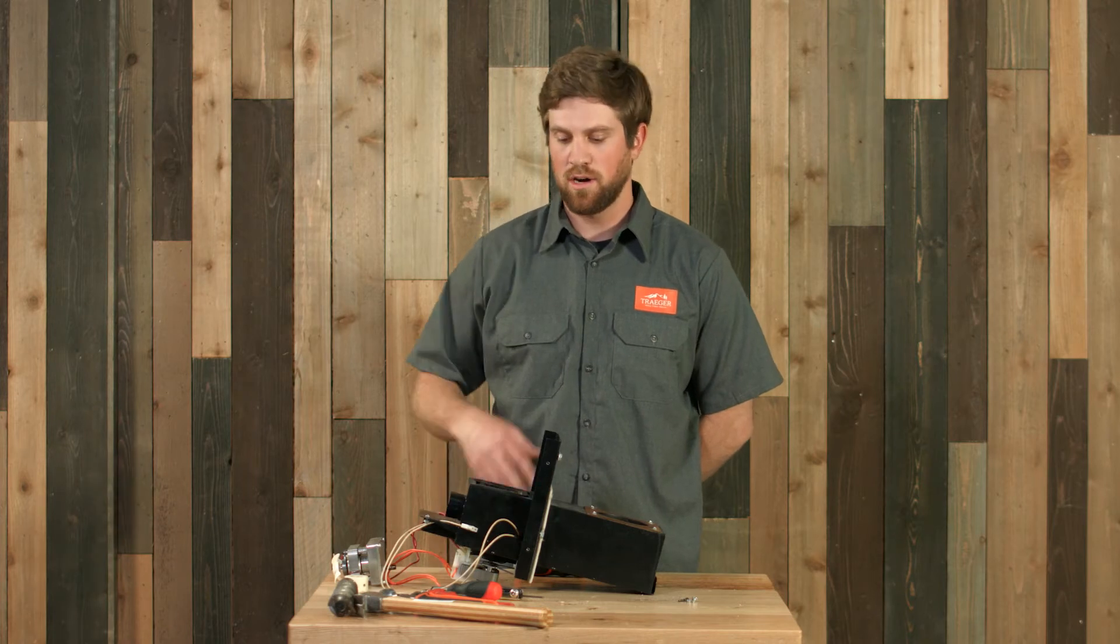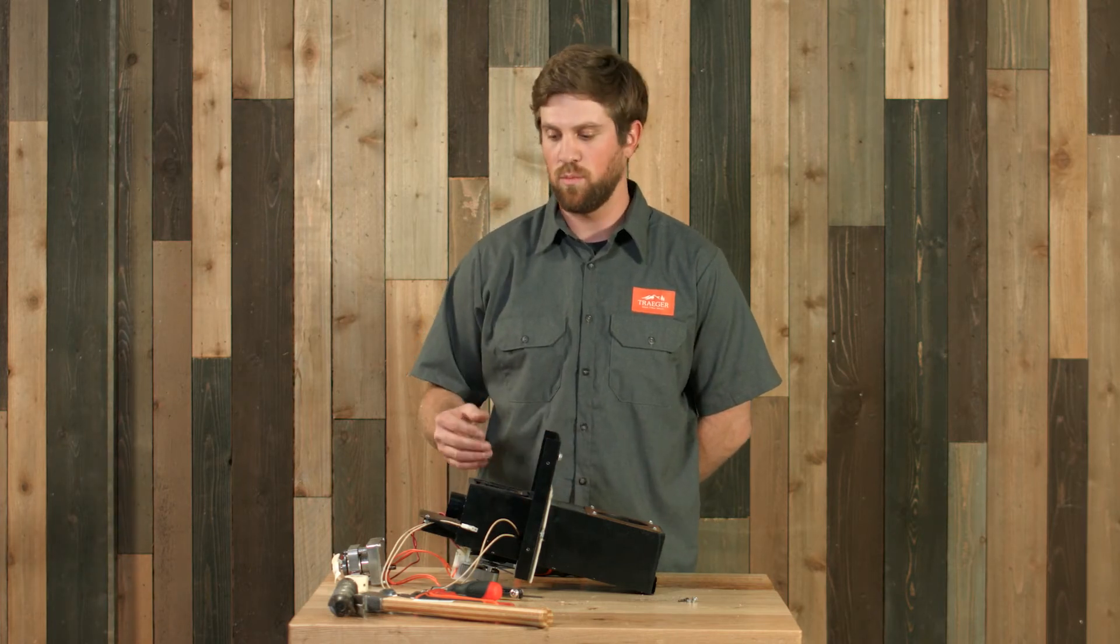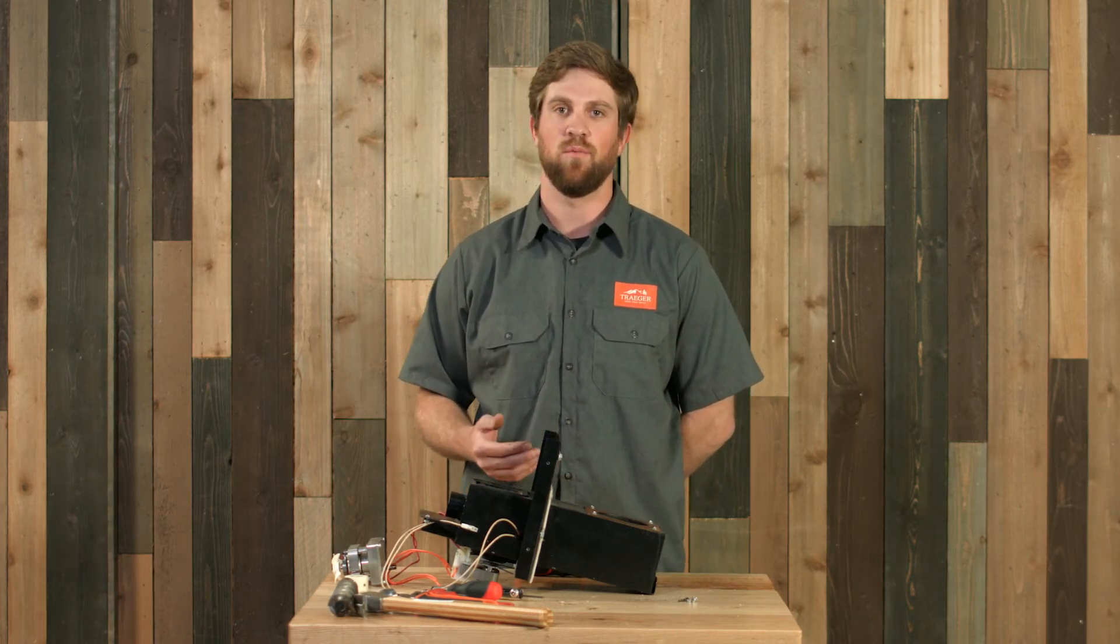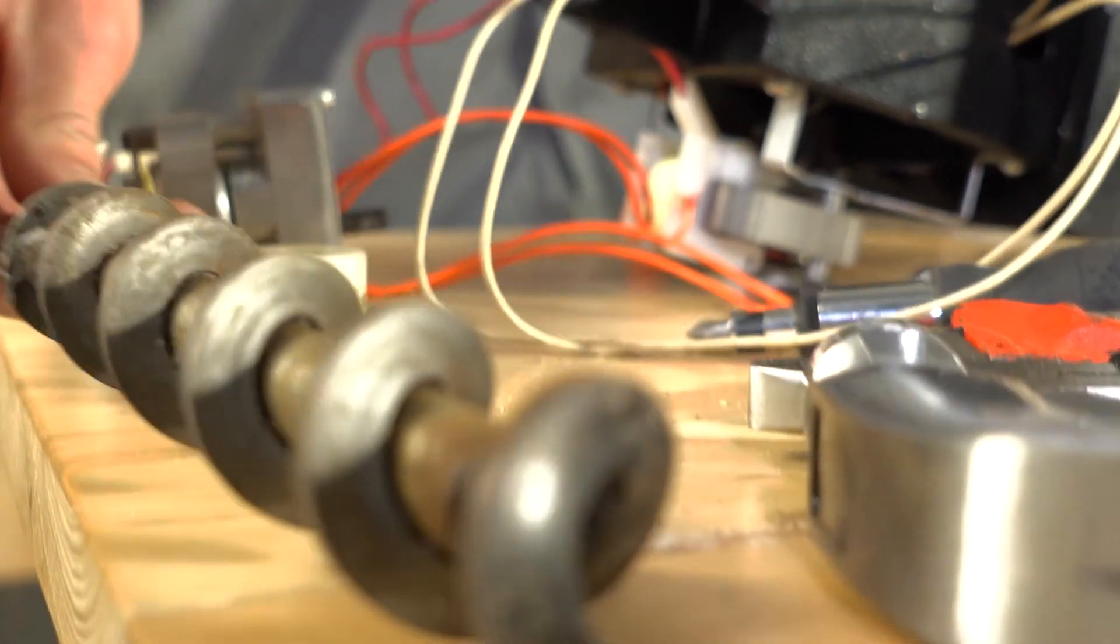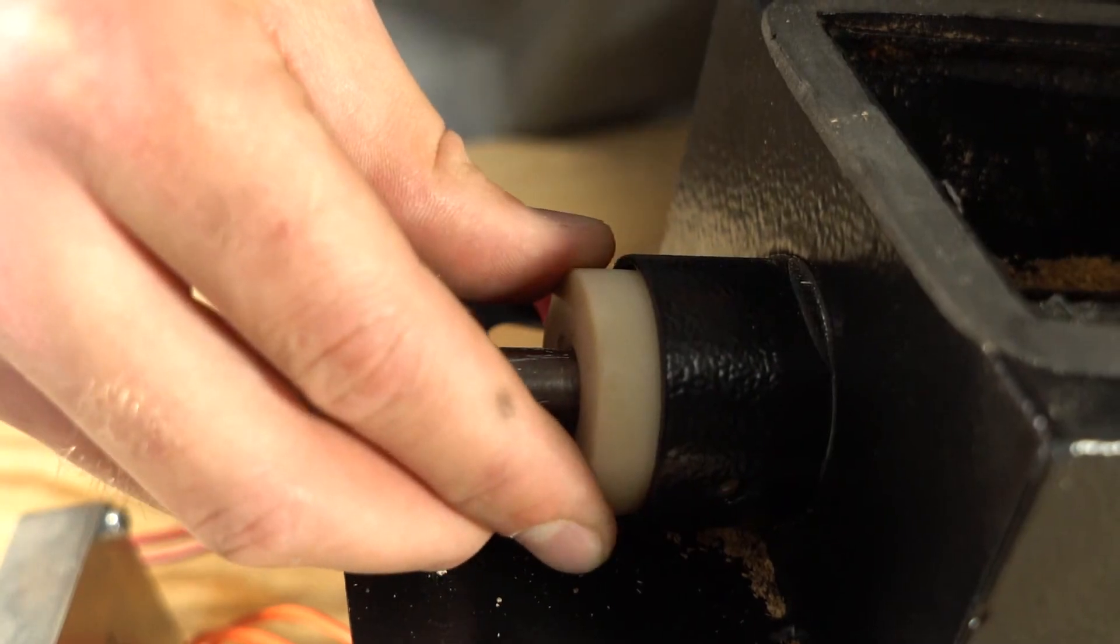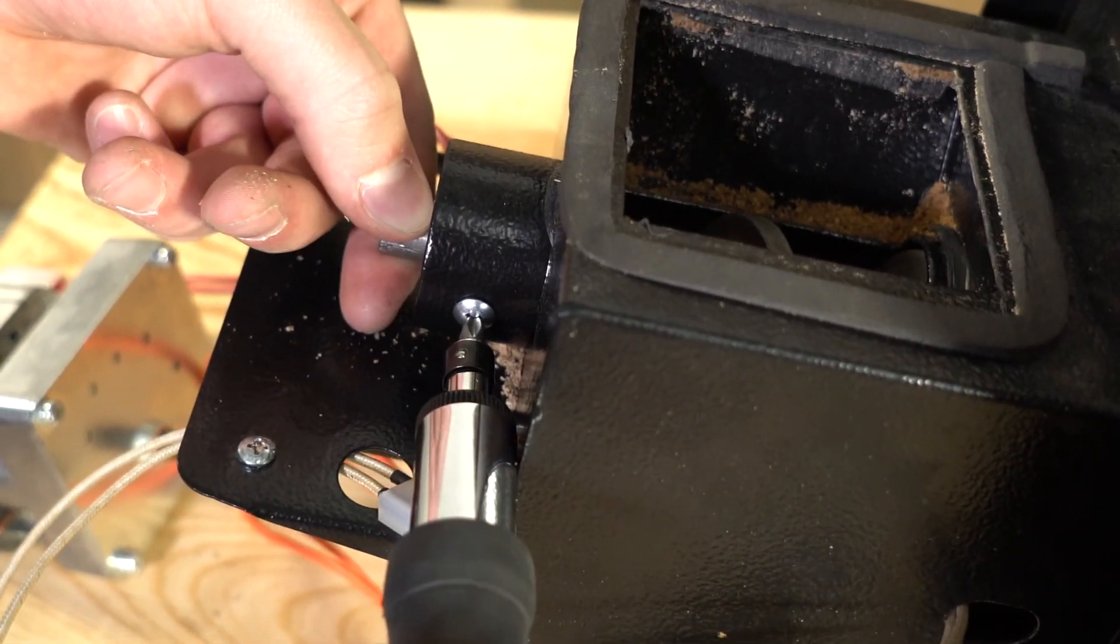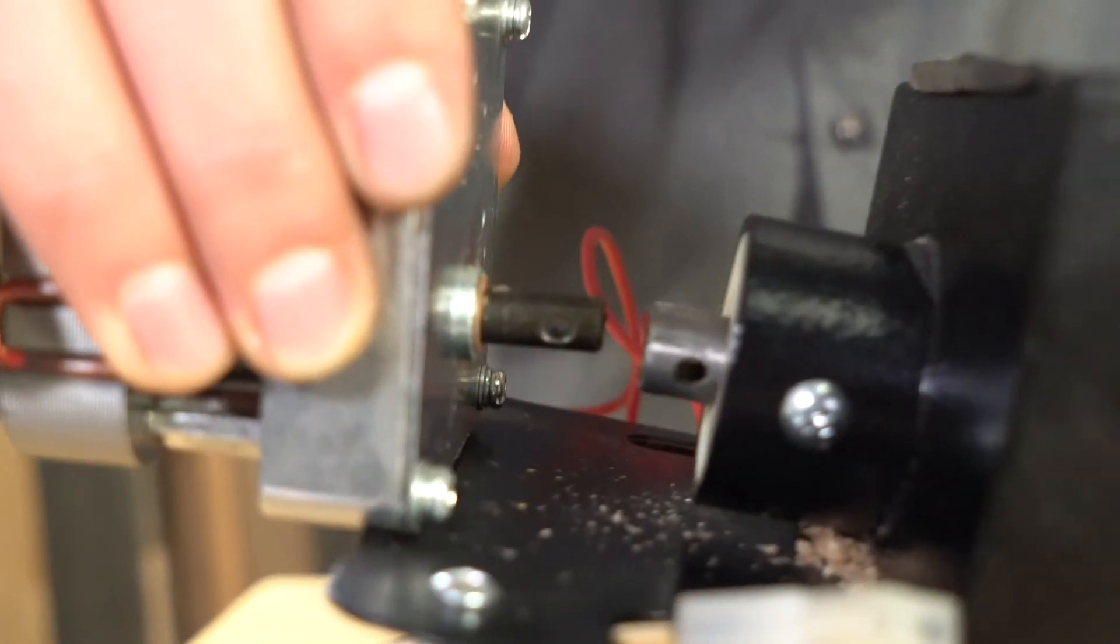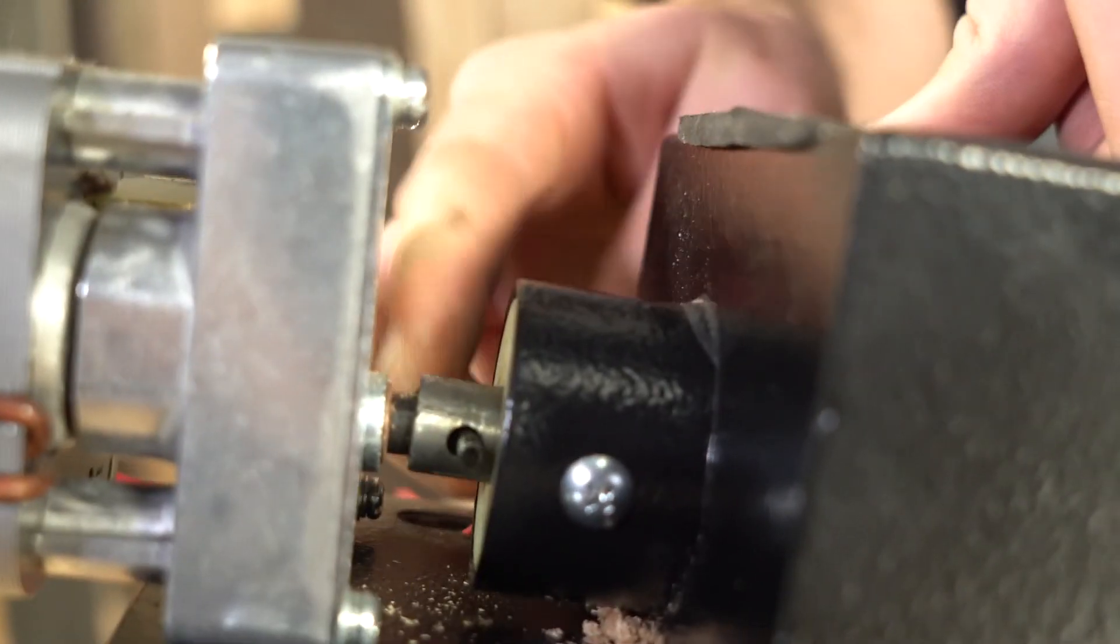All right, now that you have the auger shaft cleaned out, we're just going to put everything back together the same way that we did it. You'll first put the auger back into the auger shaft. You will set the bushing here with the set screw and then you will attach the motor back to the auger and use that shear pin and you should be back up and running.